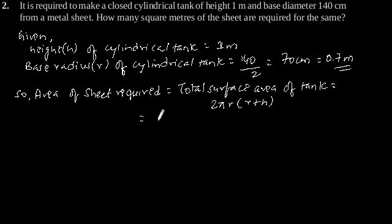So putting the values: 2 into 22 by 7 into r is 0.7 into 0.7 plus 1 meter.